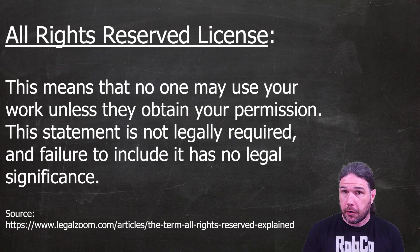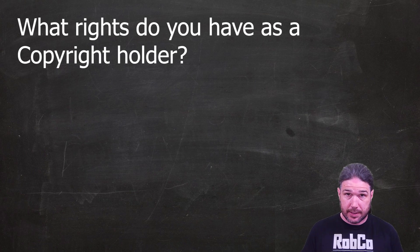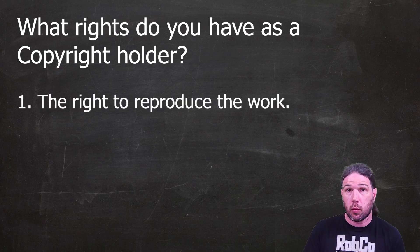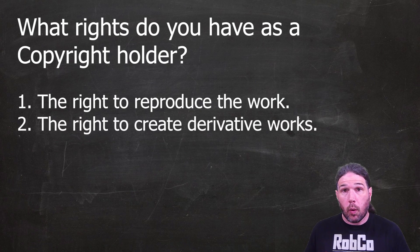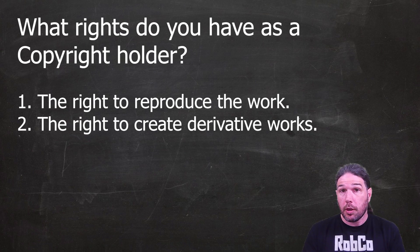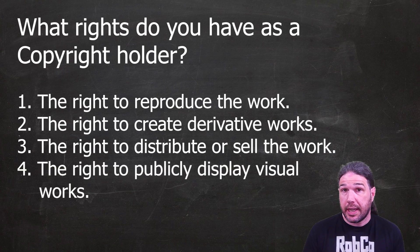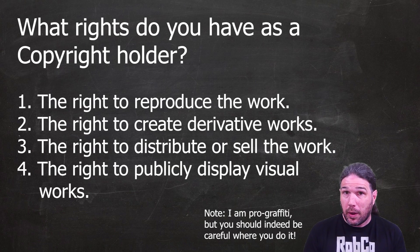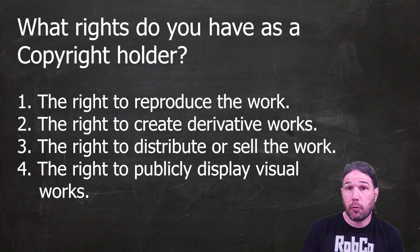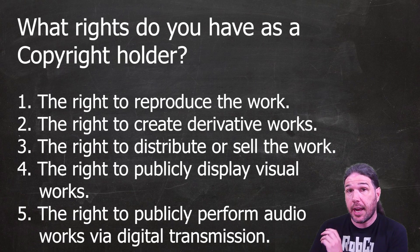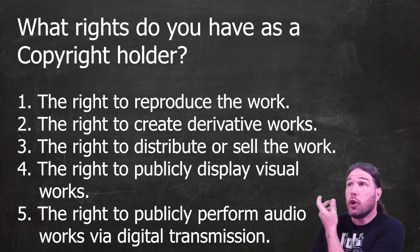In general, the copyright that you get for creating something gives you five basic rights. The first is the right to reproduce the work — someone else can't just make a copy of your work without your permission. The second right is to create derivative works, which change the work in some way for some purpose. You also have the right to distribute or sell your work as you see fit. You have the right to display the work in public, although any graffiti artist will tell you that you have to be careful where you do so. And the right to play or transmit audio works via digitization. When you create something original, these five rights are yours and only you get to decide who gets to do each of these things.